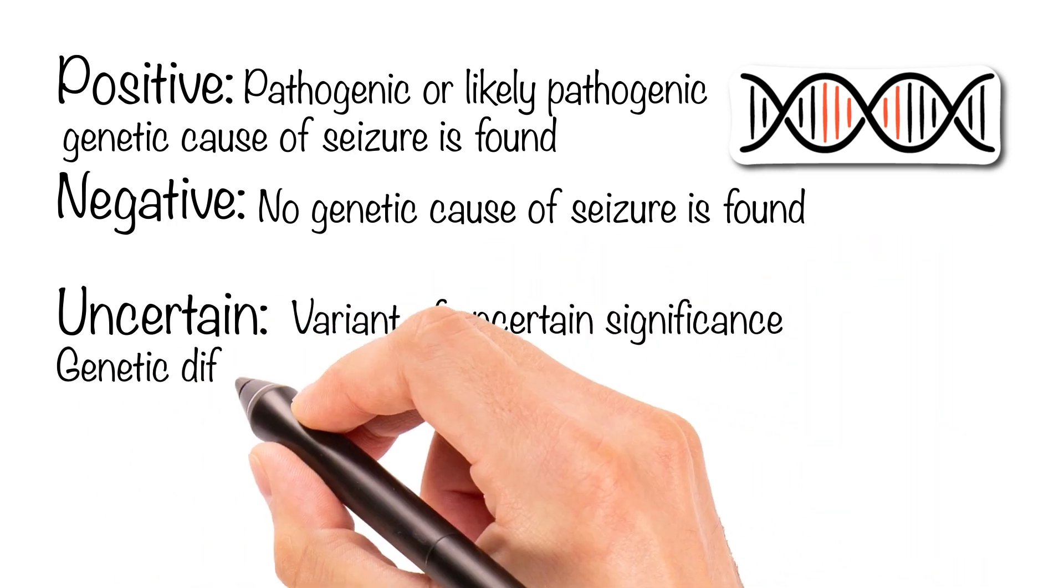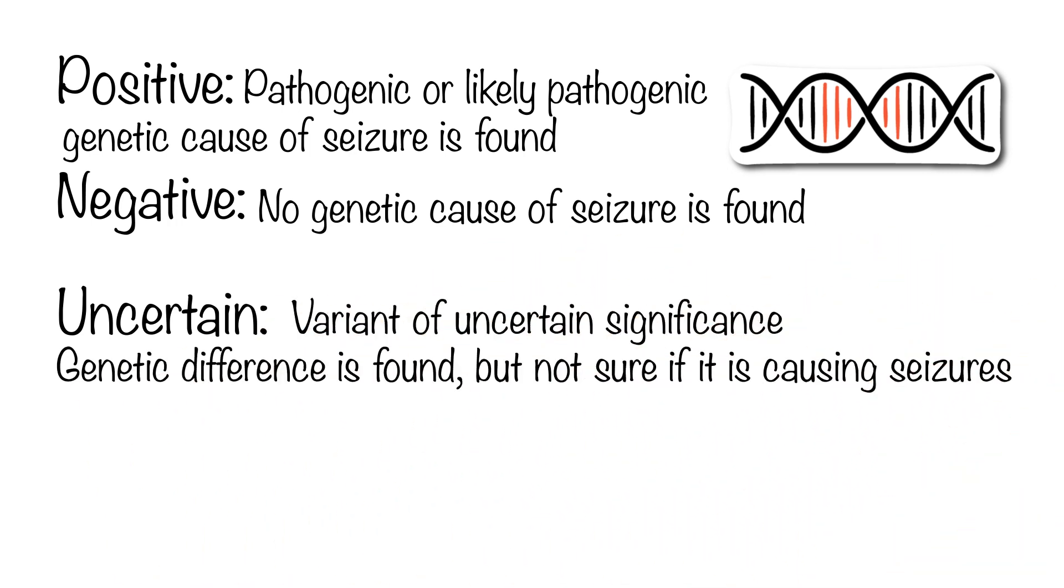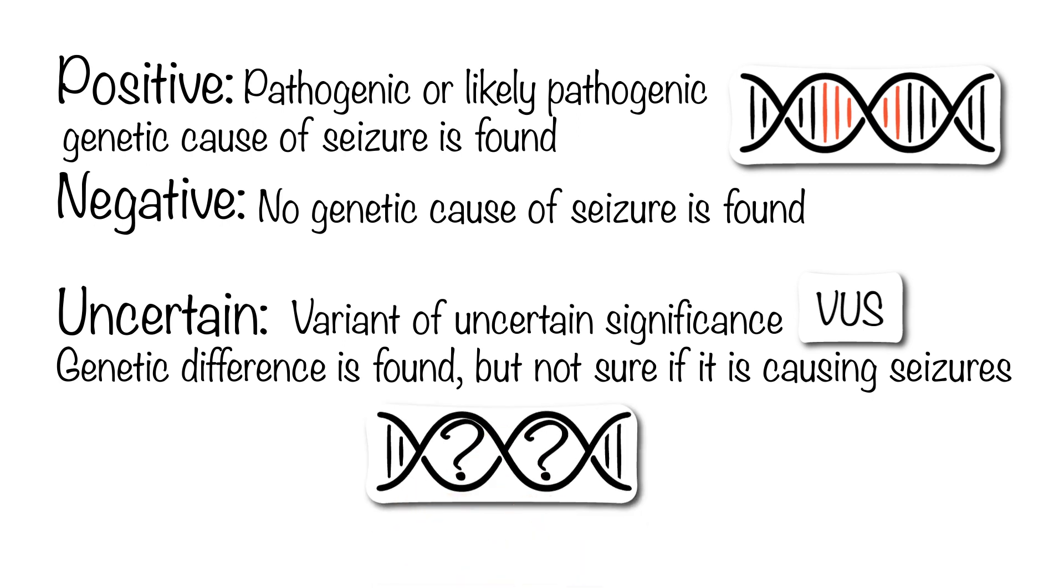An uncertain result is called a variant of uncertain significance, or VUS for short. This means that the test found a genetic variant, but we don't know if this variant is what caused your child to have epilepsy or seizures. This is actually a very common type of result because our genes all look a little different from one another, and not all genetic variants cause medical problems.